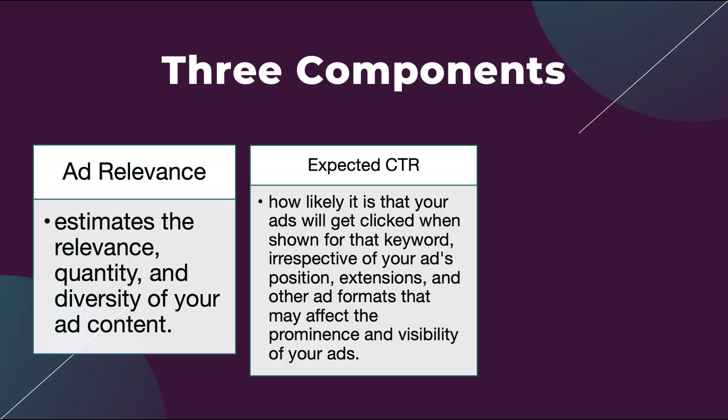The next component is expected click-through rate: how likely is it that your ads will get clicked when shown for that keyword, regardless of your ad's position, extensions, or other formats. Google comes up with a predicted click-through rate based on how your ad should be clicked on, regardless of ad position or extensions. It considers your individual account's past performance and that keyword's performance on that particular search query, but also takes into account all other advertisers bidding on it as well.